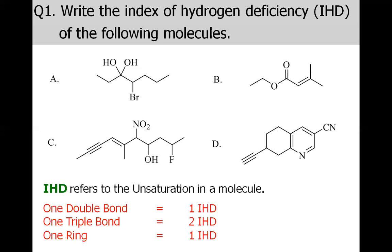If we have two double bonds, we simply say two IHD, because each double bond has one IHD and we keep on adding. So to summarize: one double bond = one IHD, one triple bond = two IHD, one ring = one IHD.